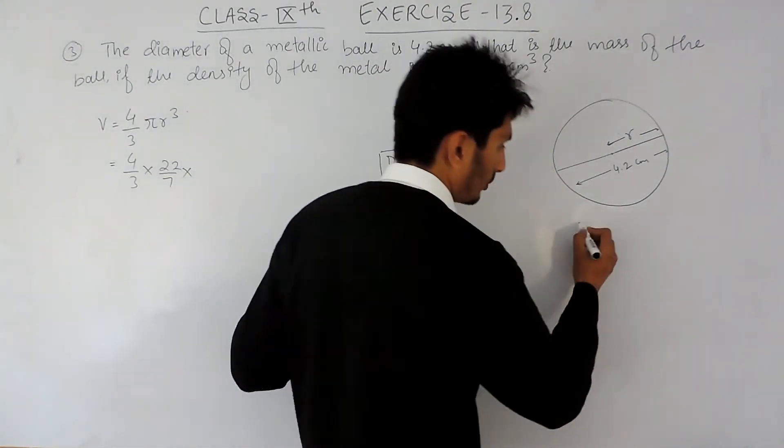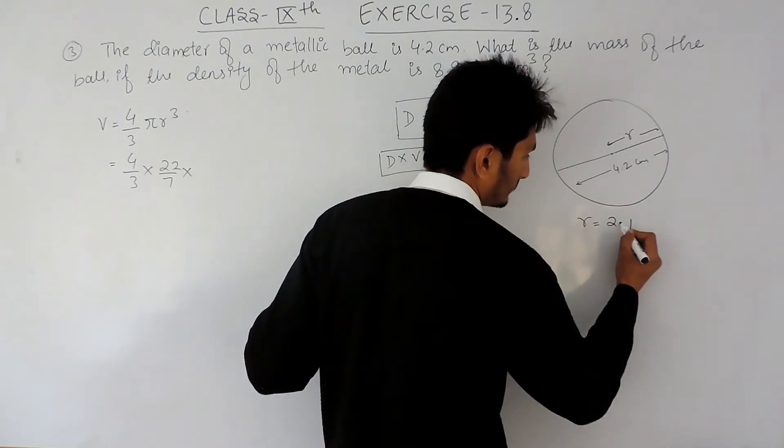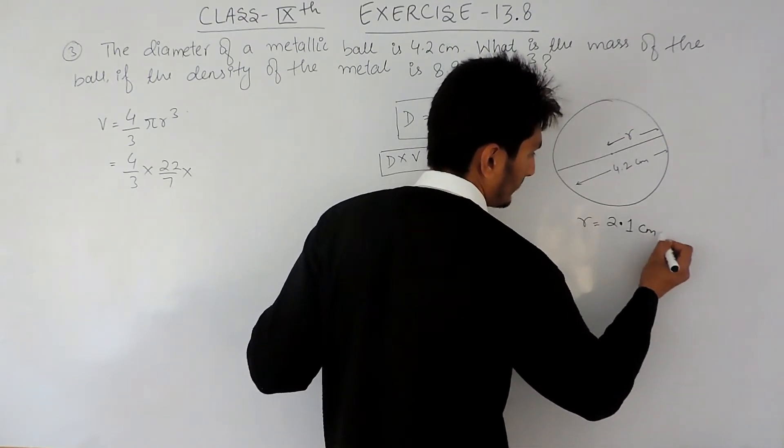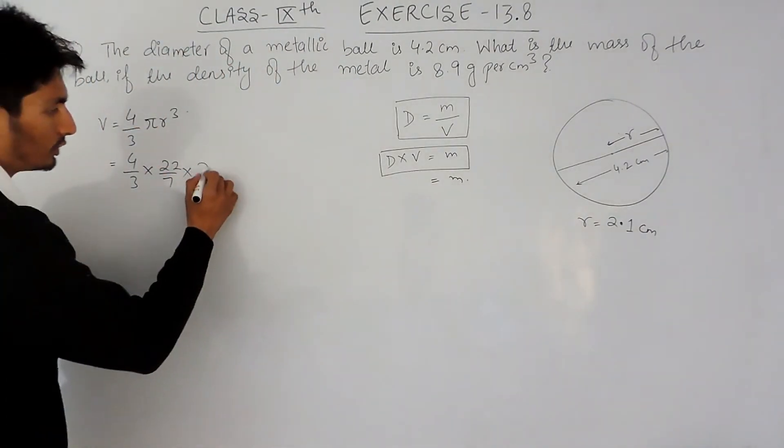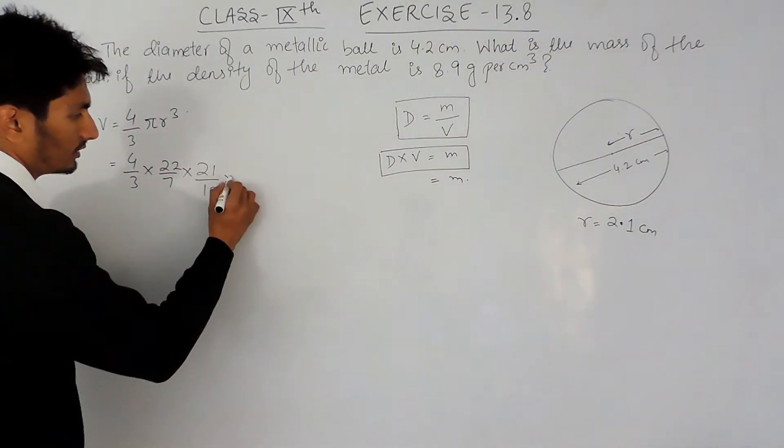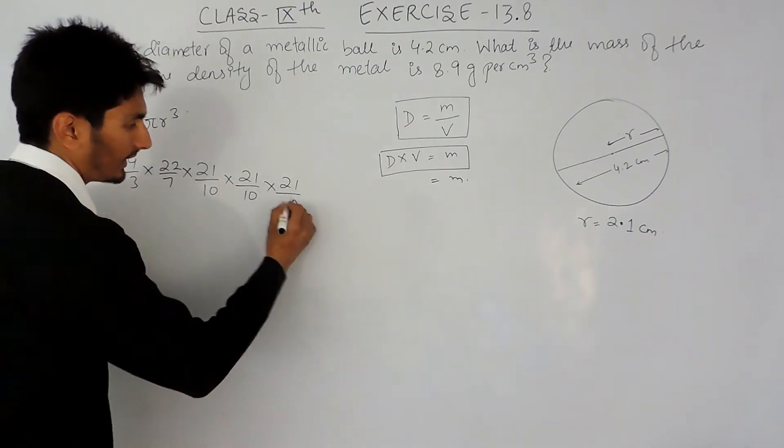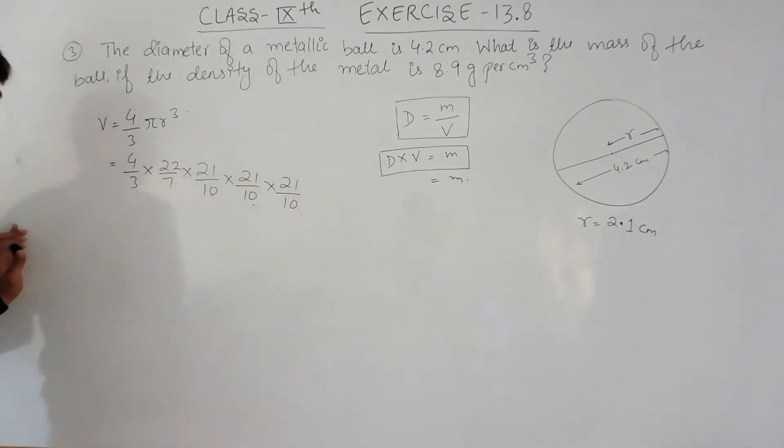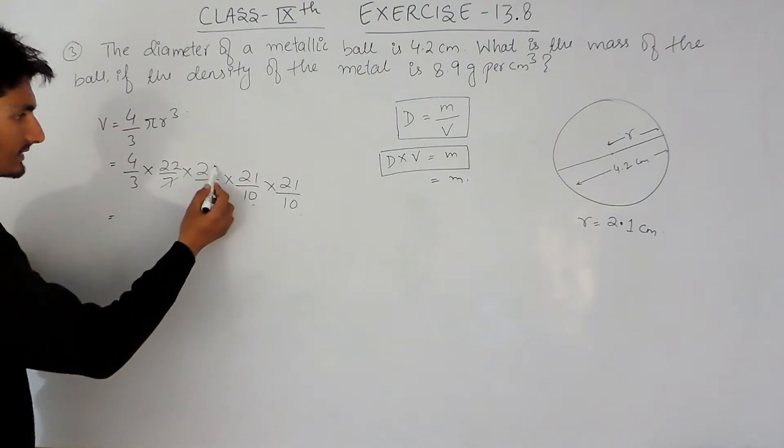So obviously radius will be half of this, that is 2.1 centimeters. So the radius is 2.1 centimeter, so it should be 2.1 into 2.1 into 2.1. And removing the decimal, I can place 10 for each number so it can be cancelled three times.